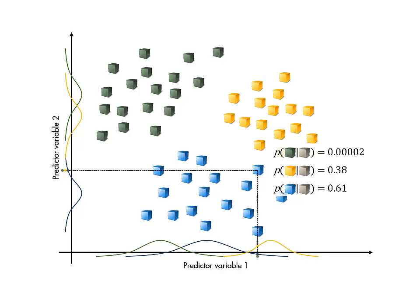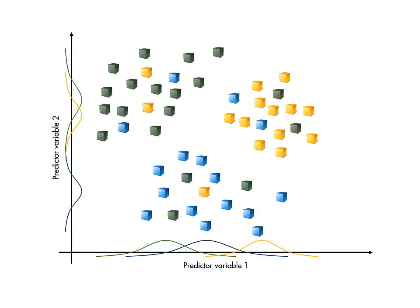Note that one benefit of this probabilistic approach is that probabilities give some indication of how clear the classification is. Also, because the predictions are based on the statistical distribution of all the observations rather than individual observations, they are somewhat robust to noise in the training data.